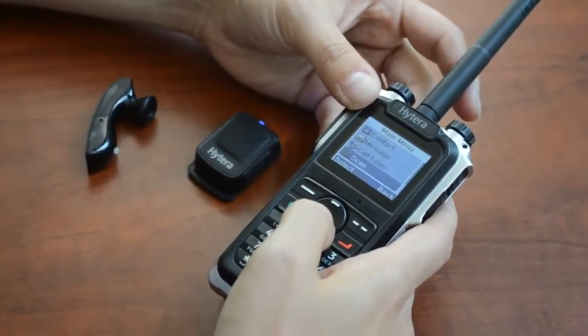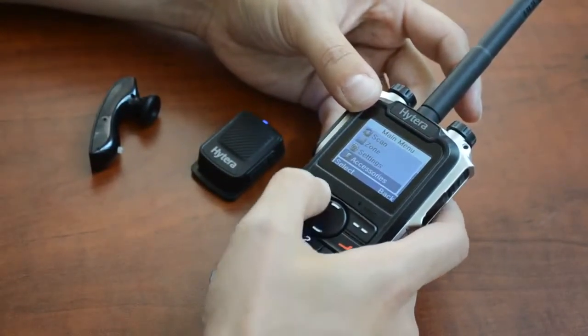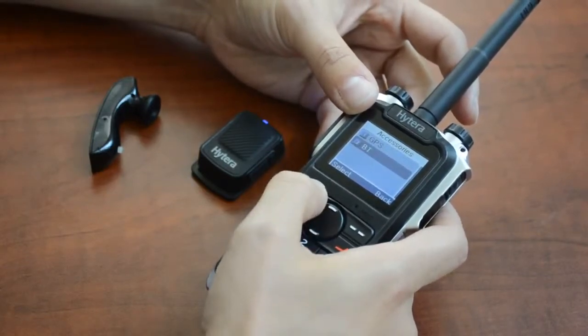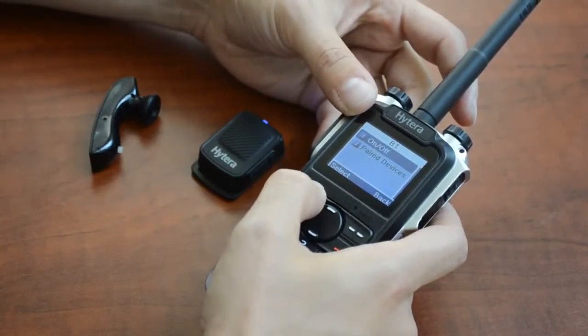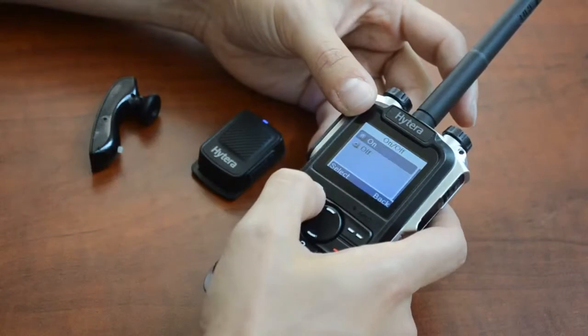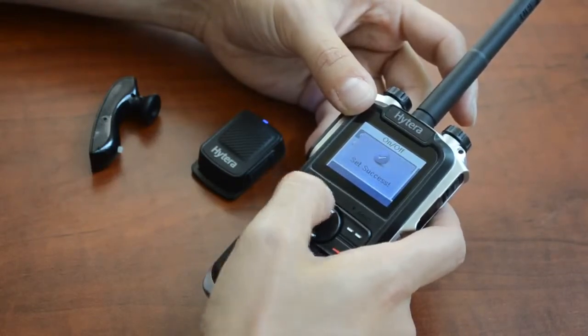Go down to accessories and press select, go to BT for Bluetooth and press select. Here you're going to press select on on and off and make sure your Bluetooth functionality is turned on.